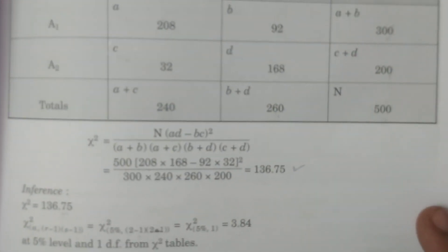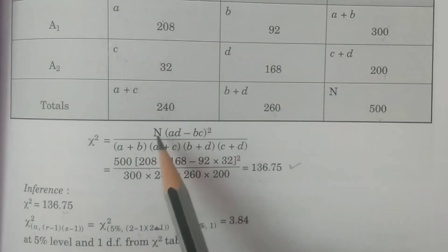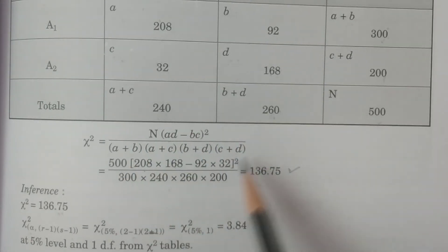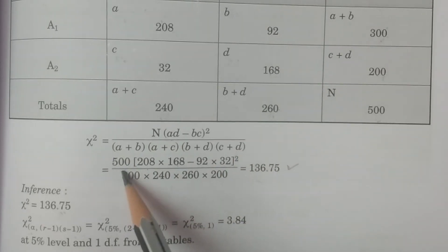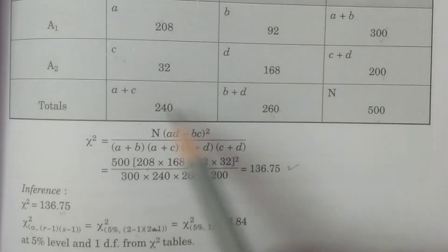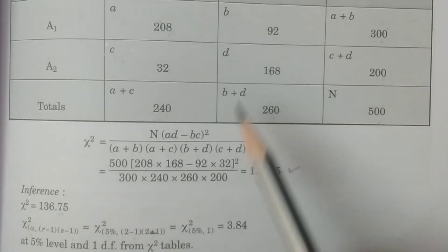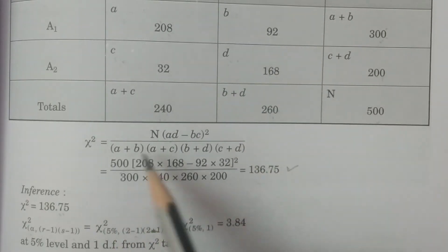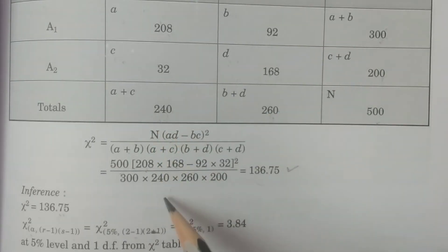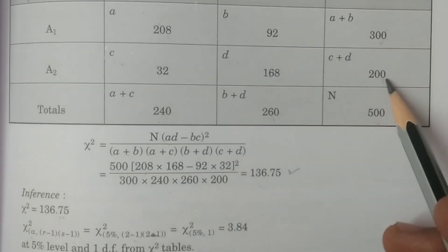Substituting into the formula: N = 500, A×D = 208×168, B×C = 92×32. So chi-square = 500 × (208×168 − 92×32) whole square, divided by (a+b)=300, (a+c)=240, (b+d)=260, (c+d)=200.